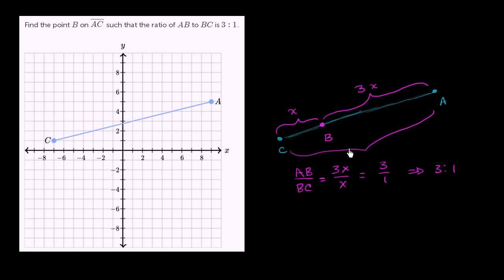This entire distance, if you have an x plus a 3x, is going to be 4x. So you'd say this is 1 out of the 4x's along the way. This is going to be 1/4 of the distance between the two points.